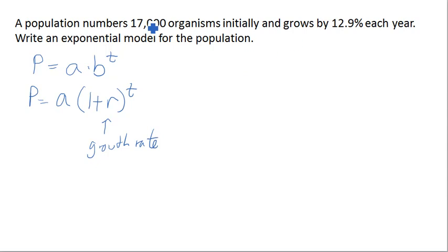So in this case, we start with 17,000 organisms, so that is our value for a, which is the initial amount.